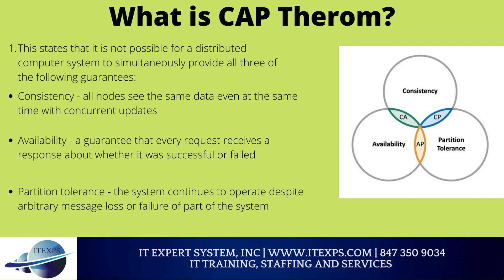This theorem has created the base for modern distributed computing approaches. The world's most high-volume traffic companies like Amazon and Google use this as a basis for deciding their application architecture. It's important to understand that only two of these three conditions can be guaranteed to be met by a system.